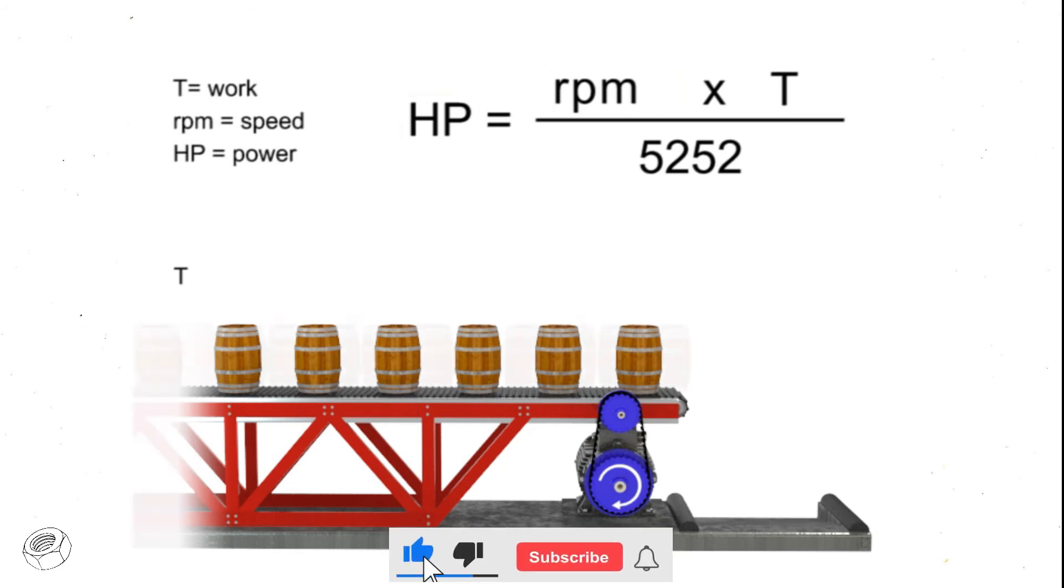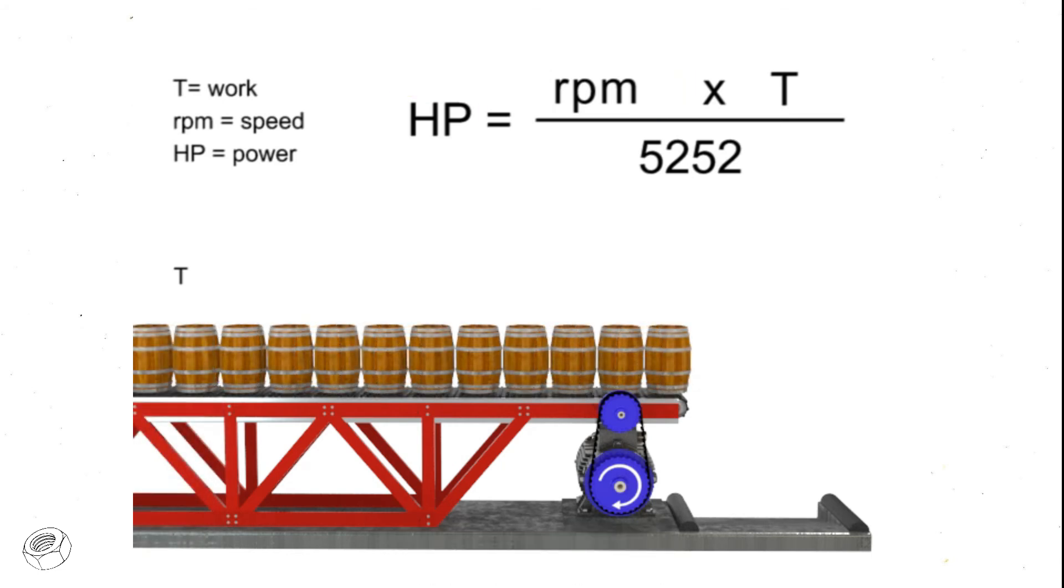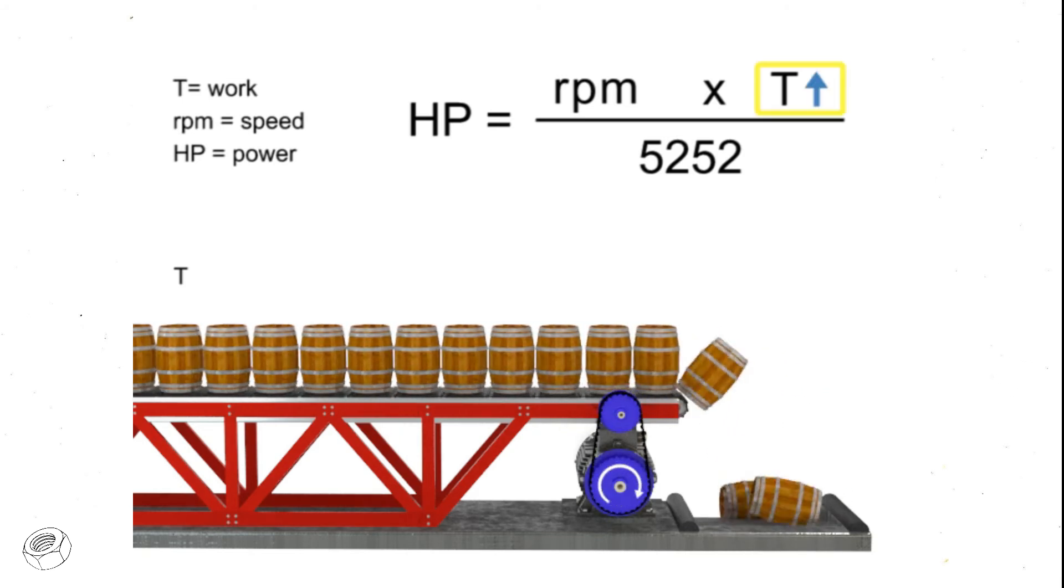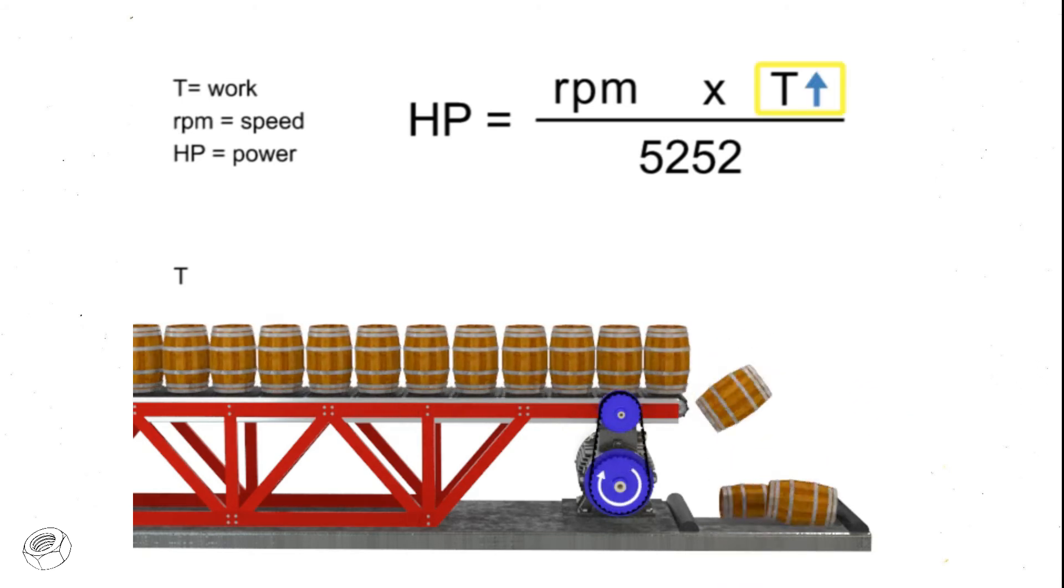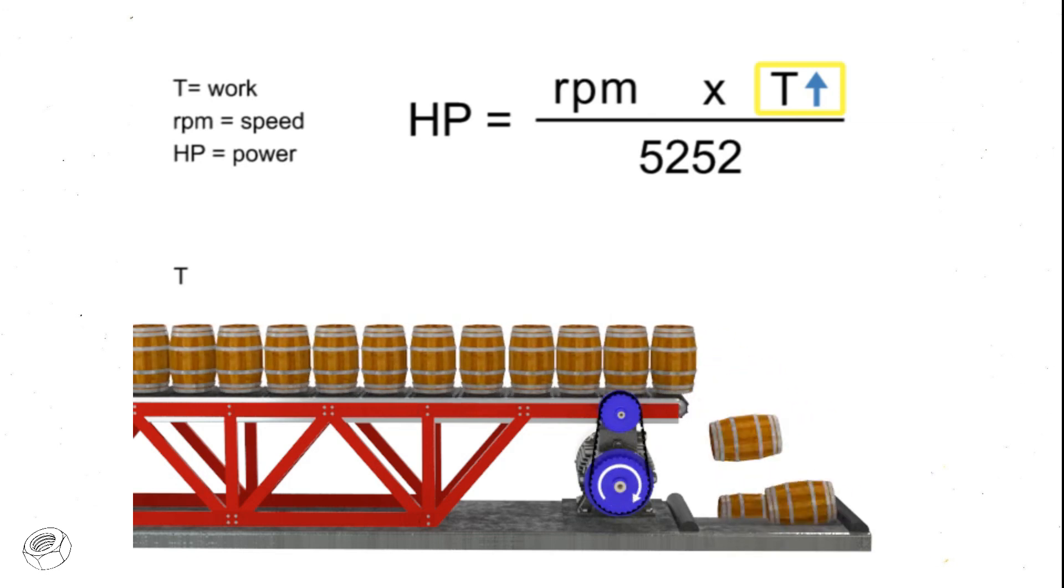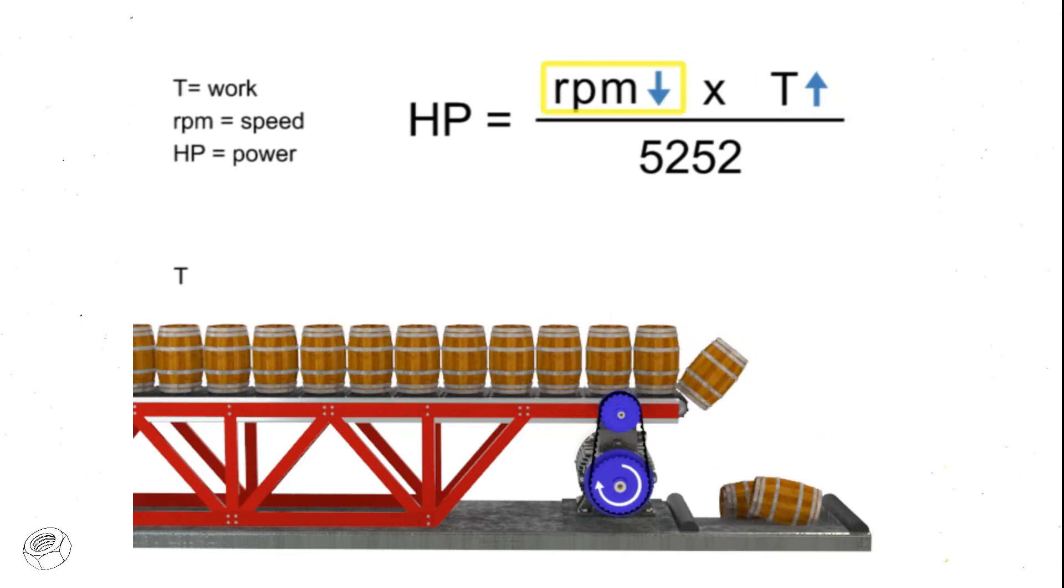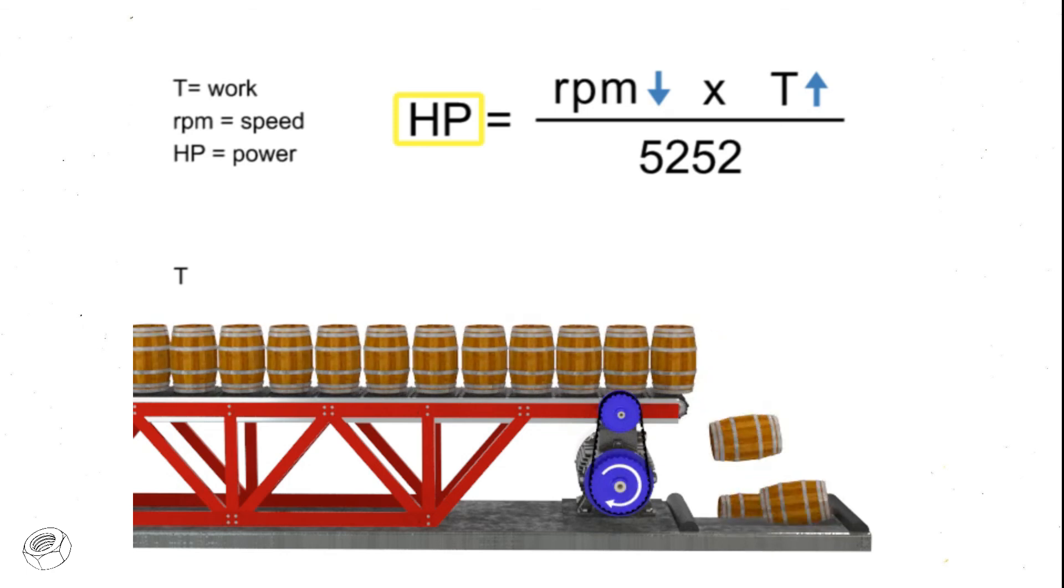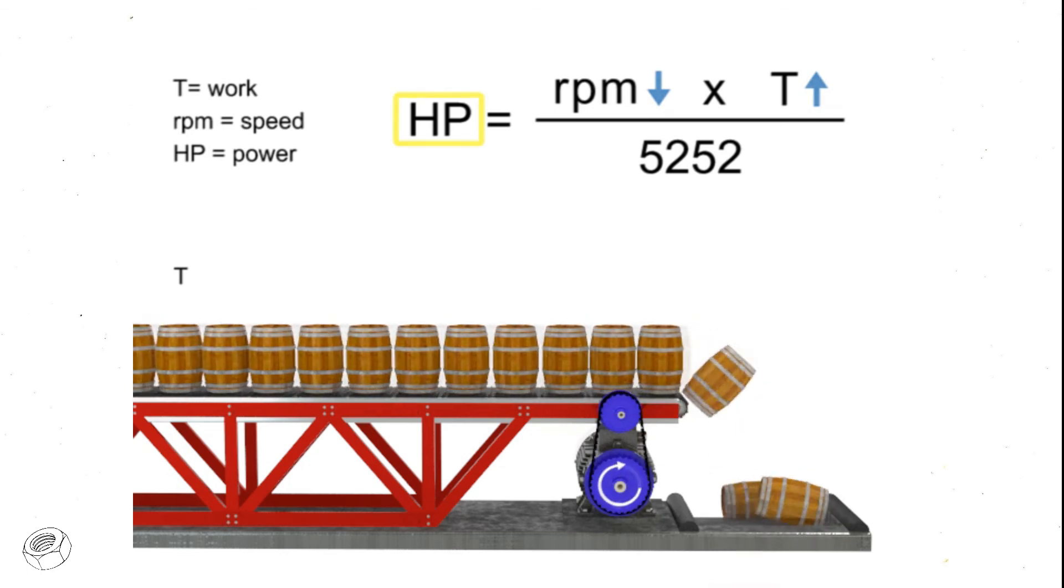Let's say we want the horsepower of our motor to remain constant, but wish to increase the torque. If torque increases, the speed of the conveyor decreases, so that the horsepower required of the motor remains constant.